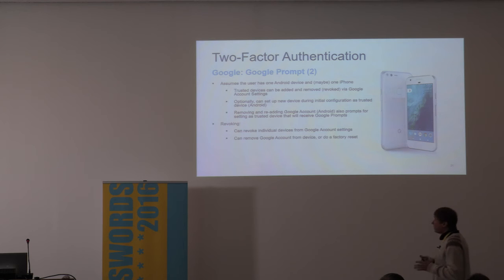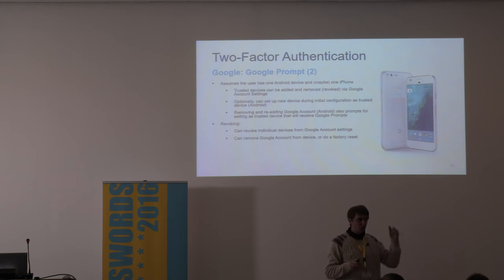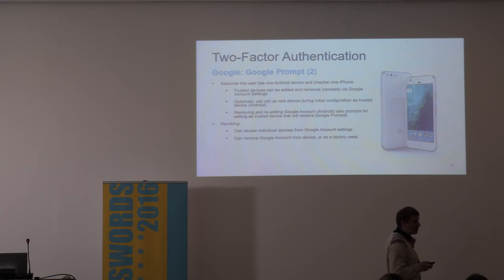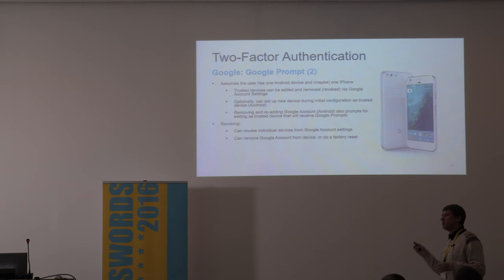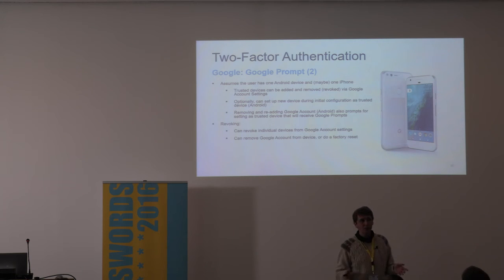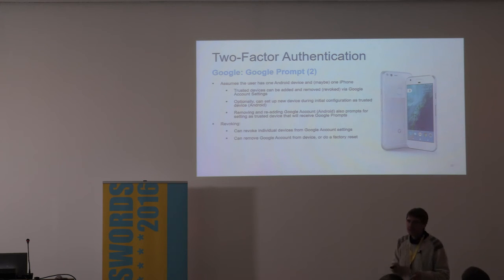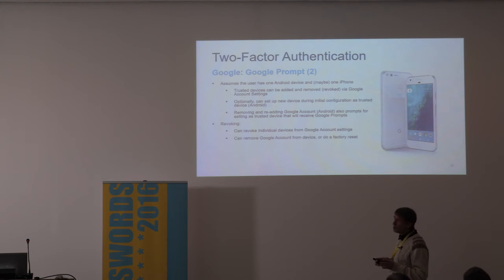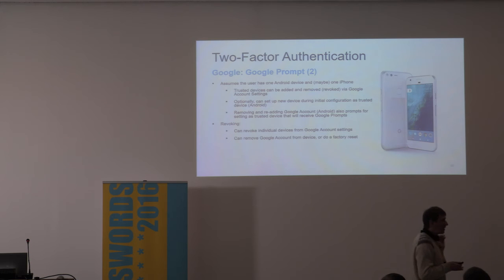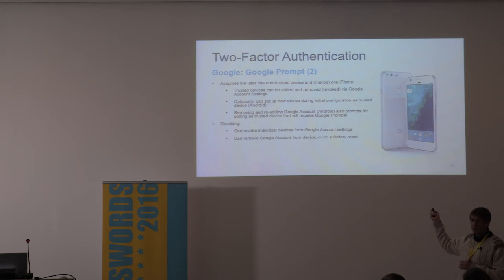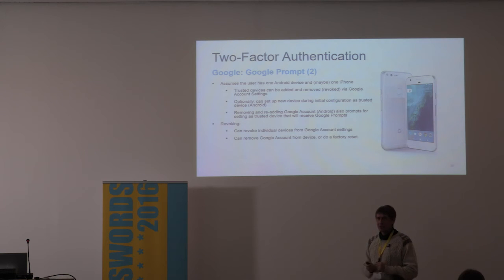You can revoke any individual device enrolled in Google Prompt — by logging into your Google ID online with any web browser, from the device itself, or with Android Manager by just locking the device. I think this method is more secure than TOTP for obvious reasons. Technically you should not be able to move Google Prompt confirmed status by cloning the device memory — however, you can still do that in rare cases.